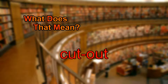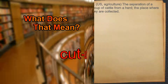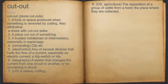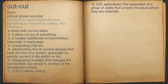What does cut-out mean? Cut-out. Noun. 1. A hole or space produced when something is removed by cutting. Also attributive. For example, a dress with cut-out sides.